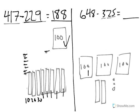How many are left? We have 100, 200, 300, 310, 320, 321, 322, 323. 323 is the correct answer. These show you how to complete subtraction problems using models.